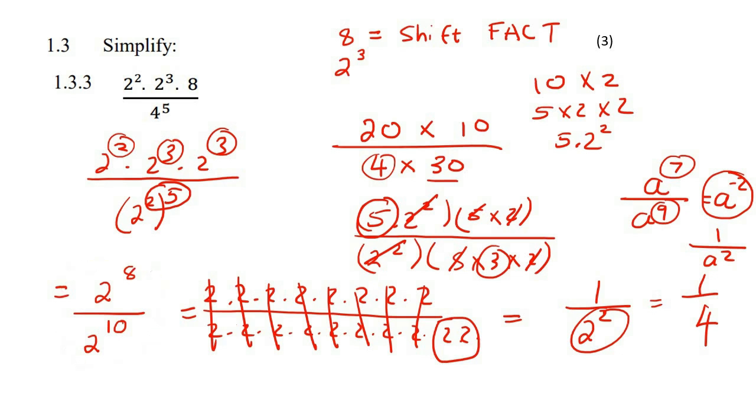So if you did that over here, you would say that that is going to be two to the power of the top number minus the bottom number, which is minus two. But then you're not going to leave your answer like that. You're rather going to write it as one over two to the positive two, which is then one over four.